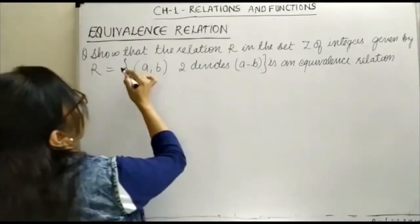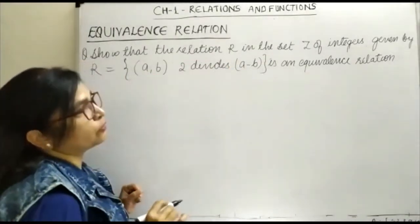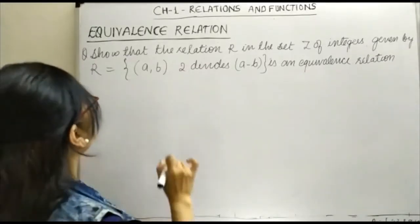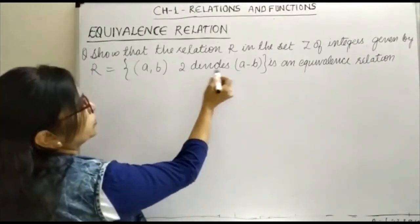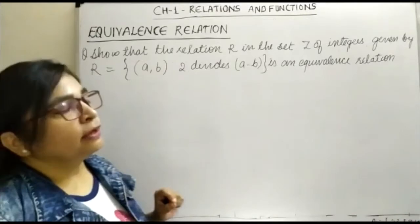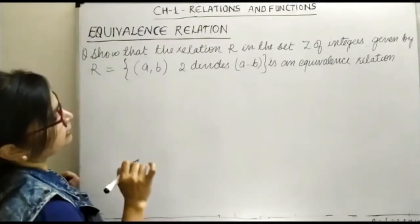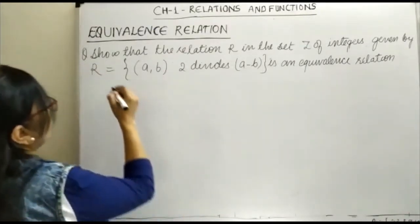The question is: Show that the relation R in the set Z of integers given by R = {(a,b) : 2 divides (a-b)} is an equivalence relation. Let us see these given conditions one by one.